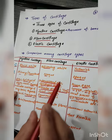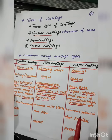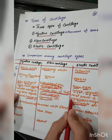The epiglottis is elastic cartilage. The arytenoid cartilage is also present in the larynx and is related to articulation and vocal production.